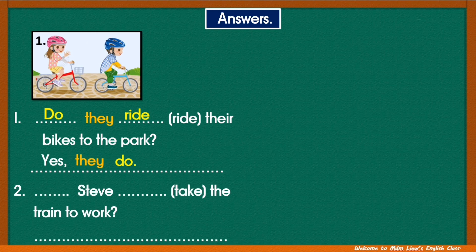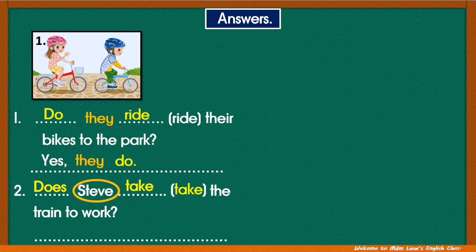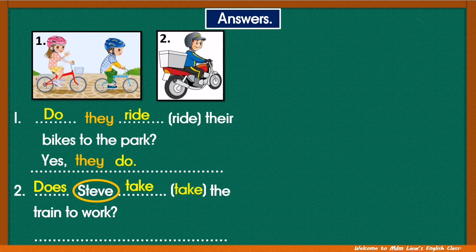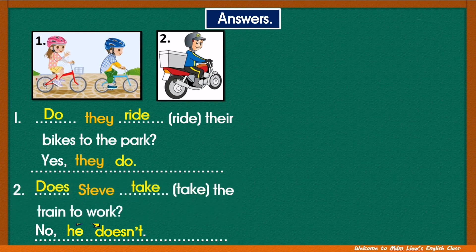Number two: look at the subject — Steve. Is it singular or plural? Singular, right? For singular subject, we need to use does. Then the verb in the base form: take. Does Steve take the train to work? Looking at the picture — no, right? Steve is a boy, so we can use he. No, he doesn't. Question: Does Steve take the train to work? Answer: No, he doesn't.